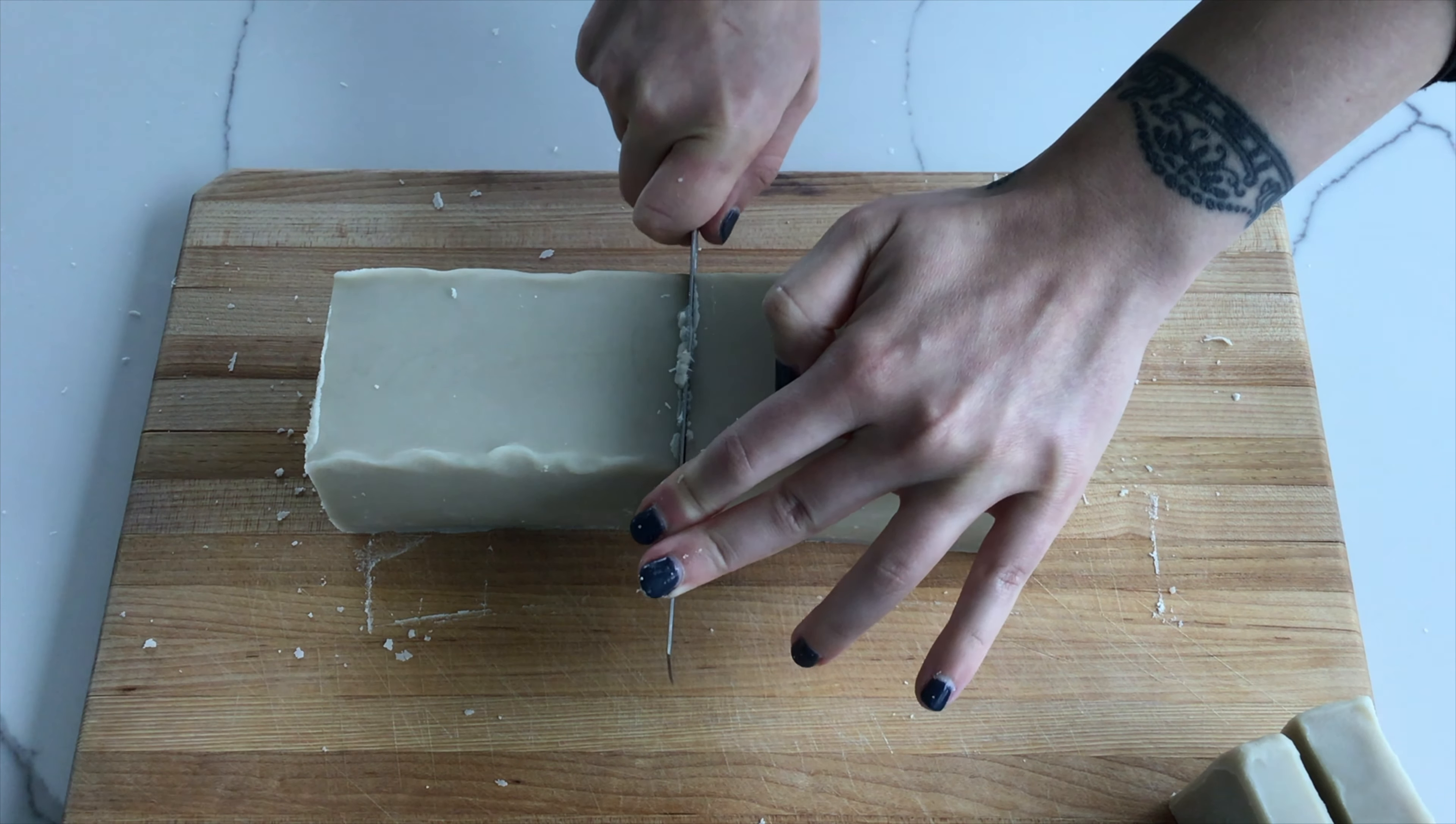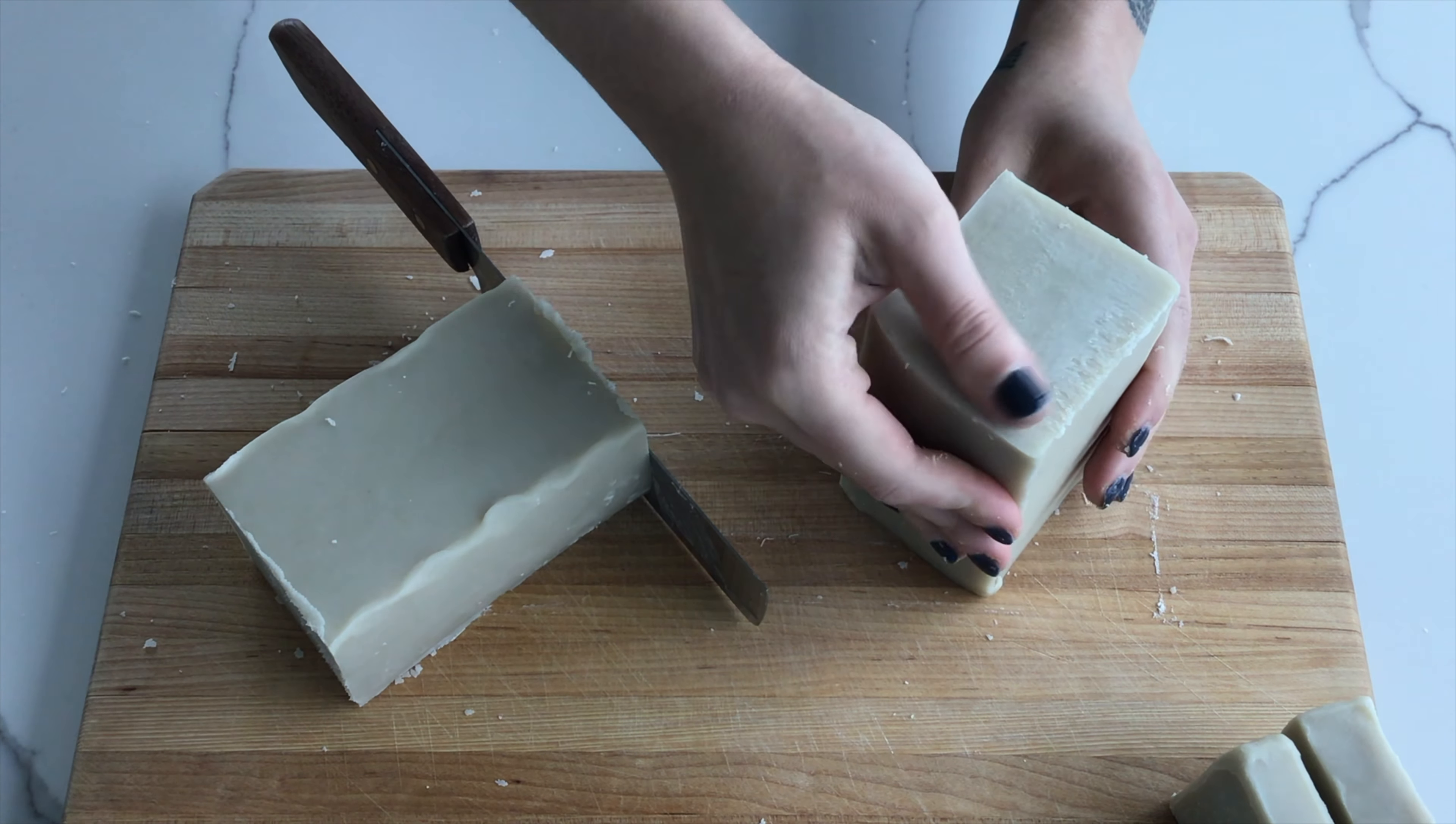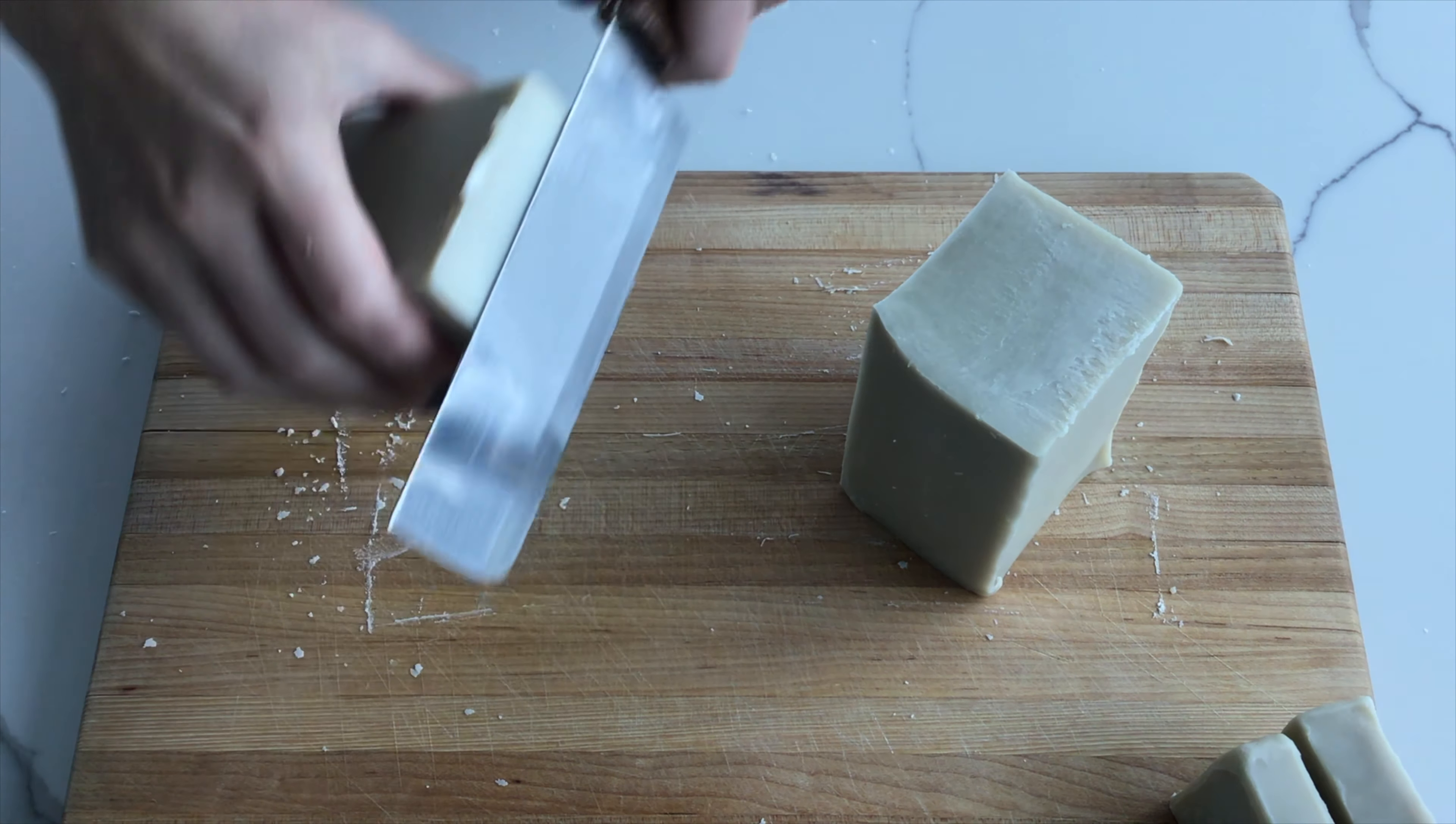It's good to check in the middle of the loaf to make sure it's saponified correctly. If the color and shade is consistent, it's saponified evenly.